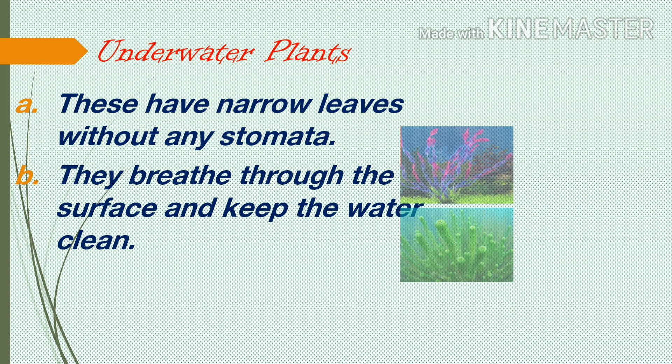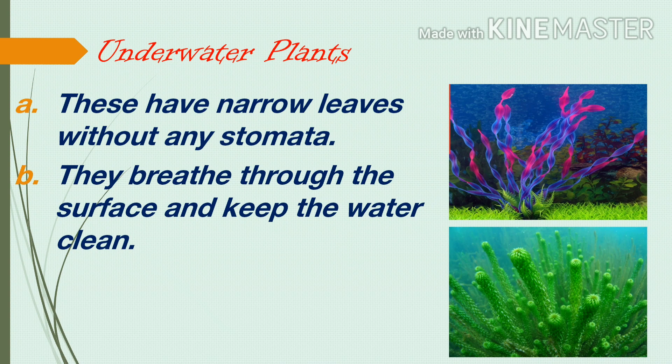Underwater plants. Plants that grow under the surface of the water are called underwater plants. Tape grass and pondweed are examples. These plants have narrow leaves without any stomata, and they breathe through the surface and help keep the water clean.